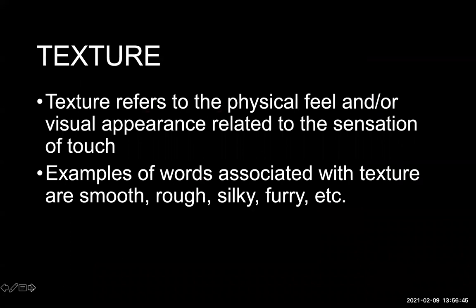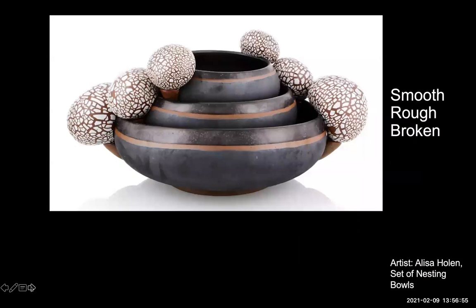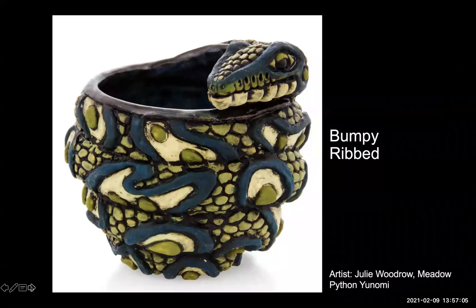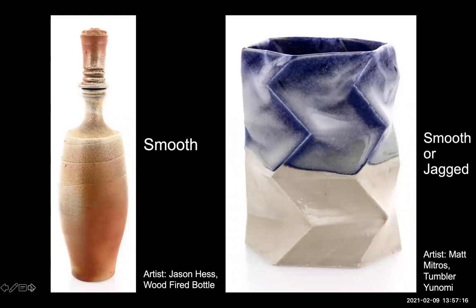Texture refers to the physical feel and/or visual appearance related to the sensation of touch. Examples of words associated with texture are smooth, rough, silky, furry, etc. The black and brown glazed areas of the bowls are smooth, while the white or crackled areas are rough or broken. This piece is ribbed due to the fabrication, but also to replicate a coiled snake. The snake itself is bumpy, and the texture of this piece is exaggerated in comparison to that of a real snake. The texture of the bottle on the left is largely smooth. While there are sharp zigzag lines, those are in the form. The glaze that covers the form is smooth and thick, actually softening those edges.